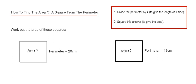Let's have a look at example one. This one has a perimeter of 20 centimeters. If we start by dividing this by 4, 20 divided by 4 is 5. So our side length for the square is 5 centimeters.